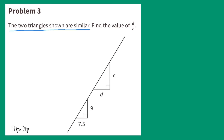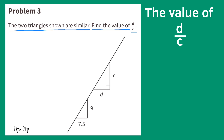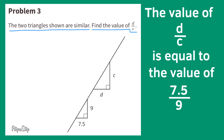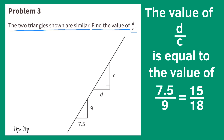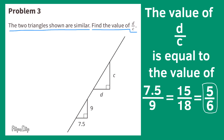Problem number 3. The two triangles shown are similar. Find the value of D over C, or D divided by C. The value of D divided by C equals 7 and 5 tenths divided by 9. 7 and 5 tenths divided by 9 equals 5 sixths. The value of D over C is 5 sixths, or equivalently 7.5 over 9 or 15 over 18.